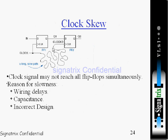Now, understanding clock skew: in short, the clock signal may not reach all the flip-flops simultaneously — it reaches them one by one. The reasons for this are wiring delays, capacitance, and incorrect design. The capacitance may vary at higher or lower levels, and as you know from the RC time constant, this causes a delay for the clock to travel from one section to another. This is a synchronous circuit because both flip-flops use the same clock.